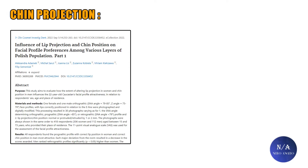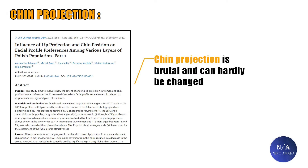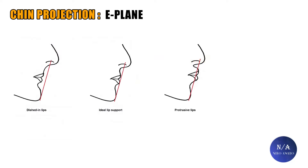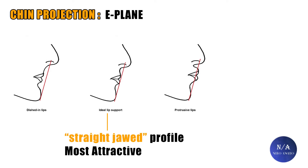Chin projection is brutal — it can hardly be changed and may be impossible without surgery. Studies show that the chin massively changes your levels of attractiveness. Any major deviation from the ideal, even a single millimeter, alters perceived attractiveness. This photo shows a side perfectly aligned with the E line. The middle profile was always found to be the most attractive. An orthognathic profile, also called a straight-jawed profile, was absolutely always the most attractive in rank and it symbolizes ideal development.